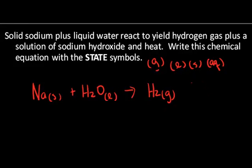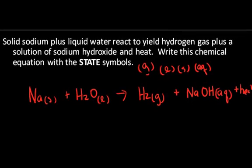Plus a solution of sodium hydroxide, sodium hydroxide. Hydroxide is a common polyatomic anion that I have memorized, OH. Sodium has a plus one charge, OH has a minus one charge, so it forms a compound in a one-to-one ratio, NaOH, with the state symbol aqueous, which means it's dissolved, plus heat. In this particular equation, heat is given off, and sometimes we include that in the equation.